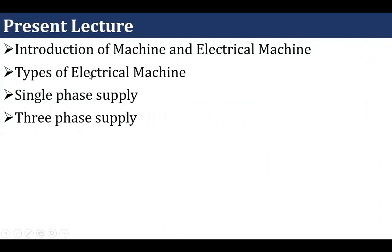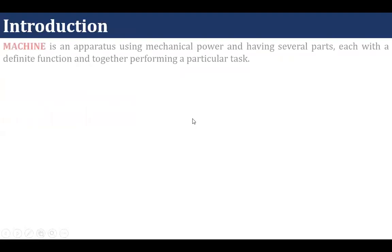In this lecture, we are going to understand what is a machine and what is an electrical machine. Then we will go through types of electrical machines, and then we will try to understand what is single-phase supply and what is three-phase supply. A machine is an apparatus using mechanical power and having several parts, each with a definite function, together performing a particular task.